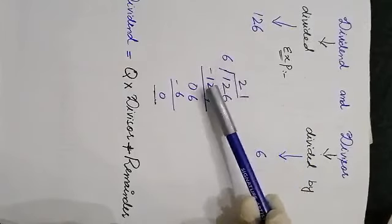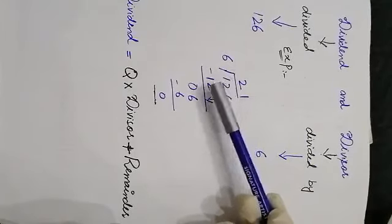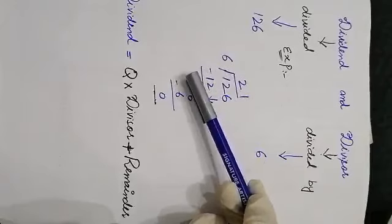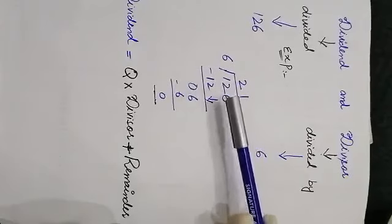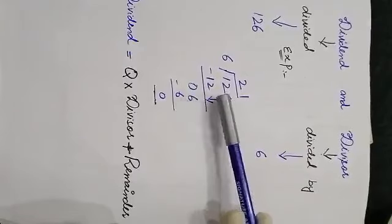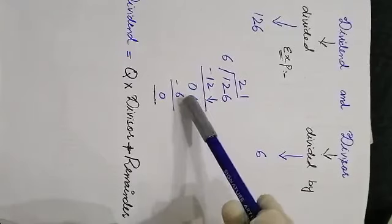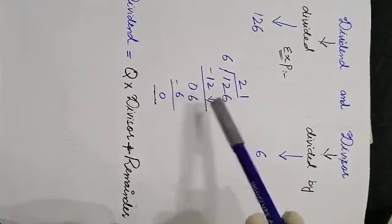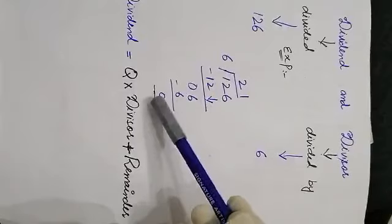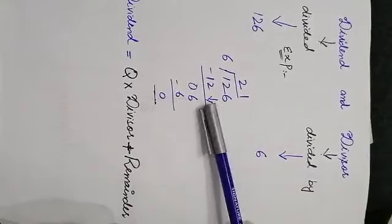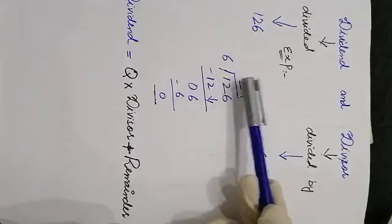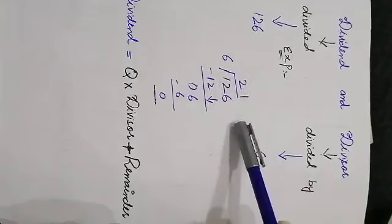Working through 126 ÷ 6: 6 twos are 12, 12 minus 12 is 0, 1 minus 1 is also 0. Now bring down the 6. With the 6 brought down, 6 ones are 6, remainder is 0. We start division from the hundreds place.